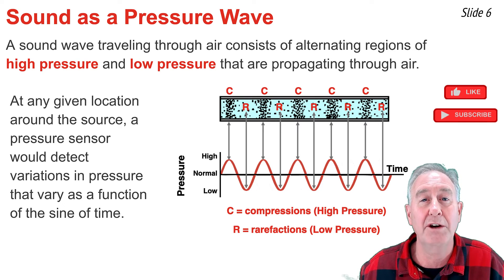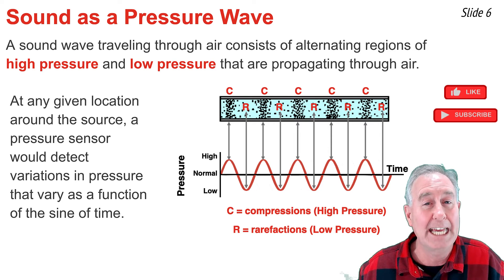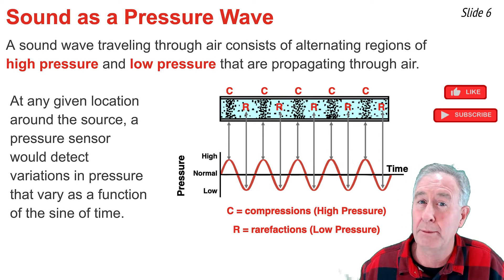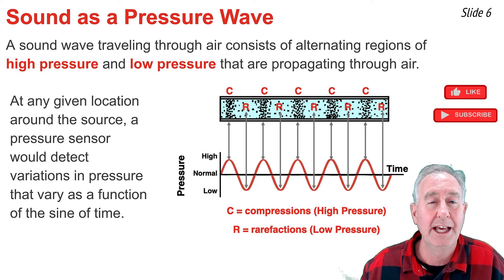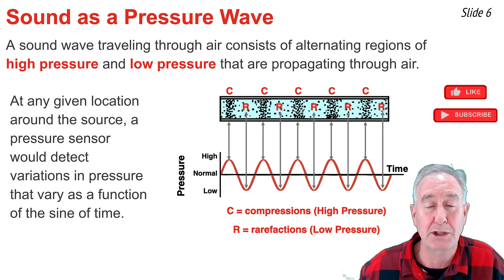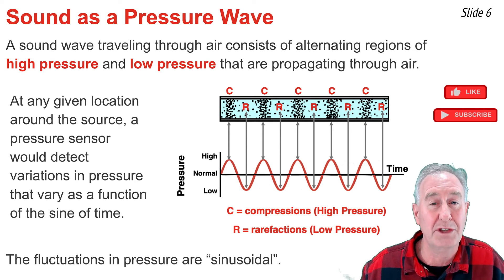One half cycle later, when a rarefaction reaches the pressure sensor, a low pressure would be detected. And another half cycle later, when a compression reaches the microphone, a high pressure would be detected. The microphone or pressure sensor would continue to sense alternations in pressure that vary as a function of the sine of time.